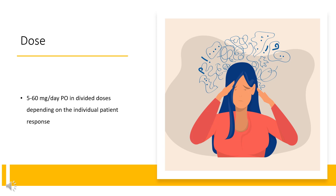Attention Deficit Hyperactivity Disorder (ADHD): Indicated for ADHD in adolescents and adults. Adzenys XR-ODT 12.5 mg orally once daily; Adzenys ER 12.5 mg orally once daily; Dyanavel XR 2.5 to 5 mg orally once daily, may increase by 2.5 to 10 mg per day every 4 to 7 days, not to exceed 20 mg per day. Evekeo 5 mg orally once or twice daily, may increase by 5 mg per week until optimal response is obtained, not to exceed 40 mg per day.